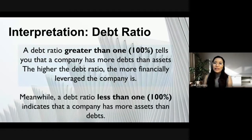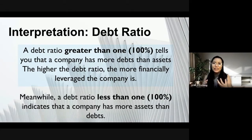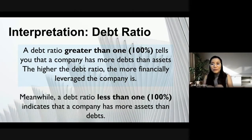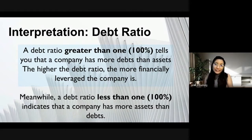How do we interpret the values? A debt ratio greater than 1 or 100% tells us that the company has more financial obligations than assets — the higher the debt ratio, the more financially leveraged the company is. A debt ratio less than 100% tells us that the company has more assets than debts or financial obligations.